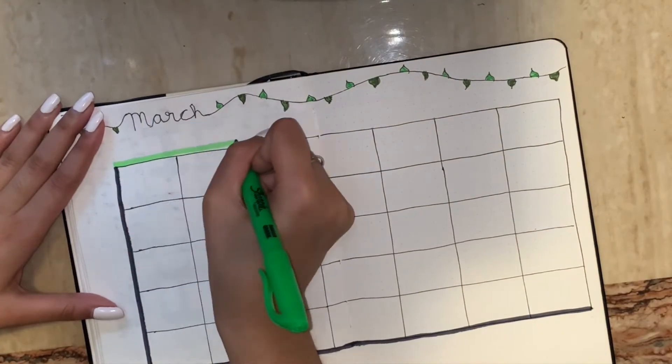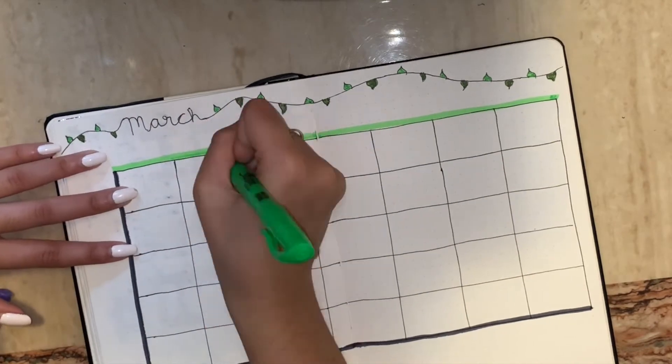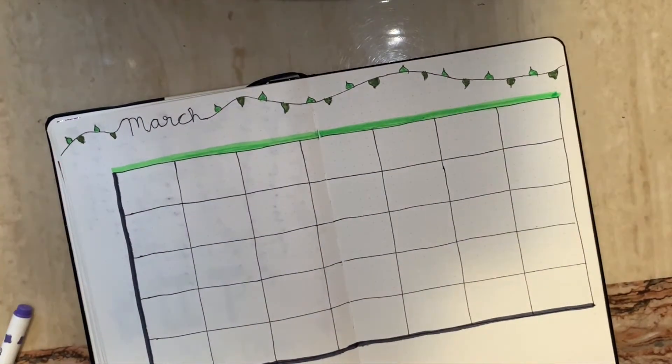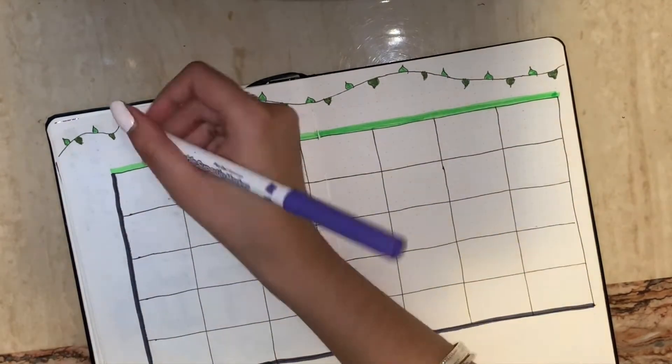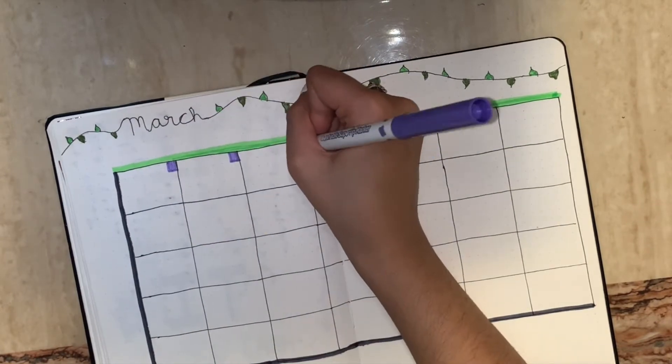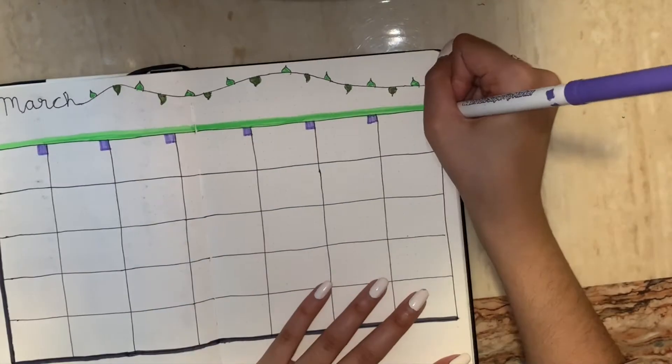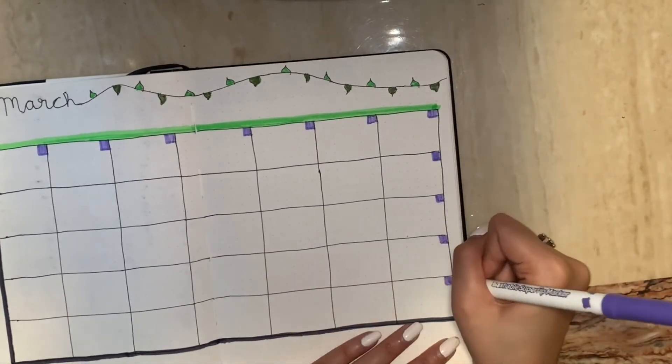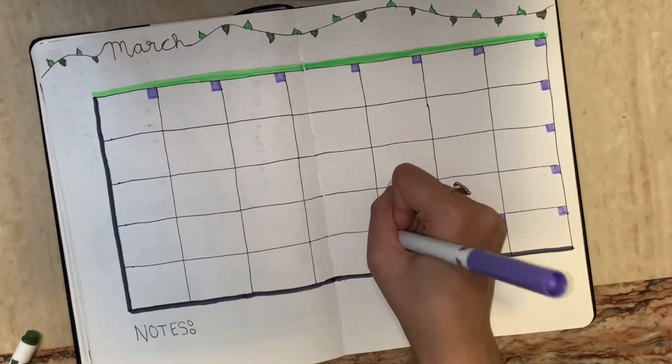Now I'm just going with a green highlighter at the top and I'm going to add purple squares in the corners of each box, and these are for the dates and then the days of the week.